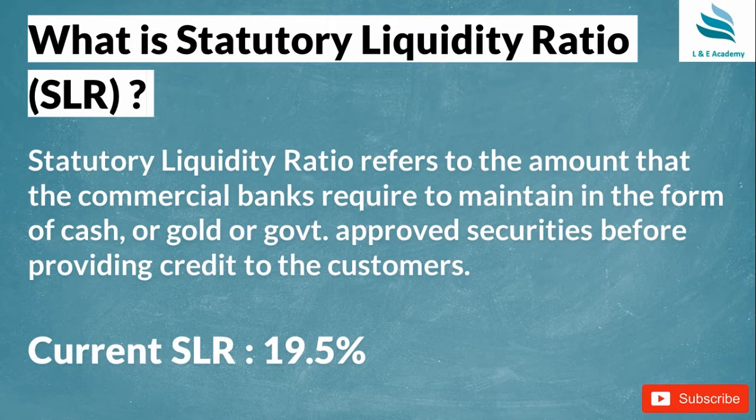Why is this security required? The security is required in case the bank fails or the economy is in a bad shape, so that the customers' money can be returned. This is a safety net — a cushion for the customer. The current SLR is 19.5%.